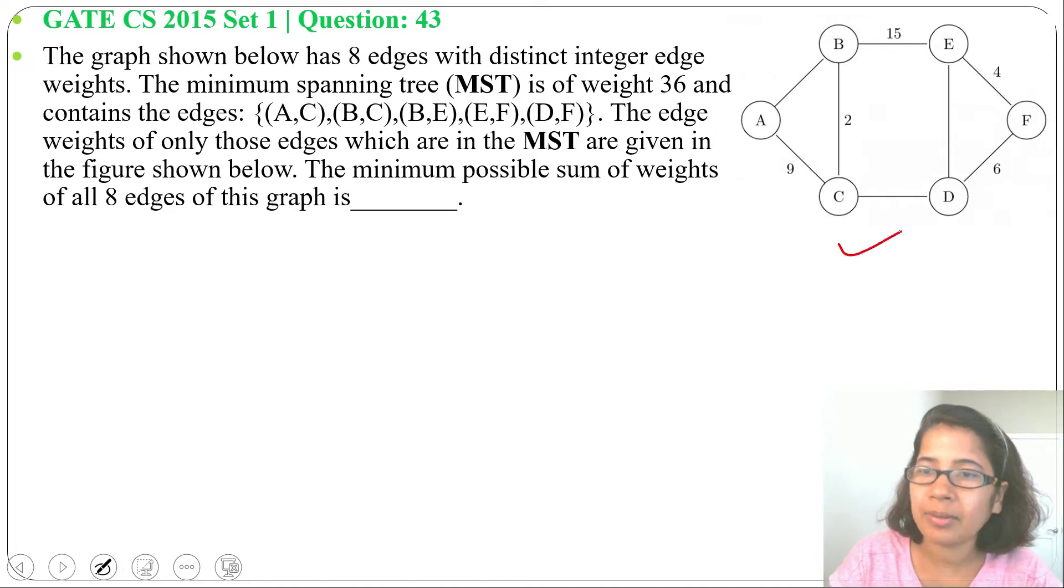So in this graph the edge widths are given which are included in the MST and 3 edge widths are not given which are excluded in the MST. So we need to guess these widths and we need to find the total width of the graph.